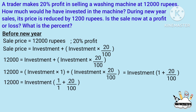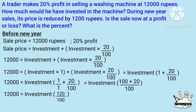This becomes 12,000 is equal to investment into 100 plus 20 by 100. Since 100 plus 20 is 120, this becomes 12,000 is equal to investment into 120 by 100.